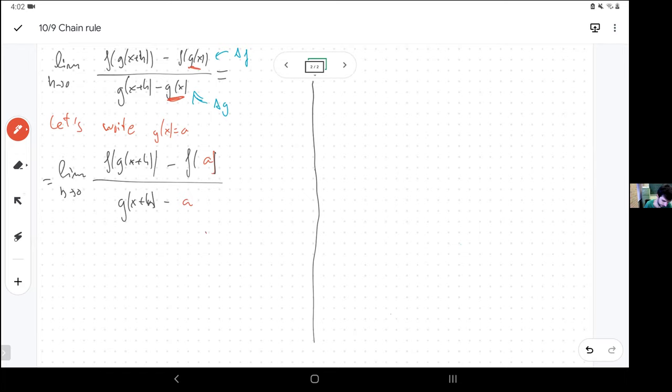So that looks pretty good. So now the h appears here and here. And it always appears inside of g of, inside of g, and added to x. So I wonder if I can just write g of x plus h equals b.